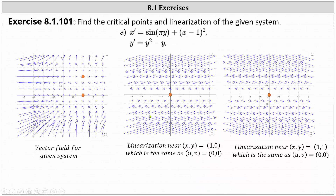Before we go, let's look at this graphically. On the left, we have the graph of the original vector field, which verifies we have critical points at one comma zero and one comma one. The graph in the middle shows the linearization near x comma y equals one comma zero, which is the same as u comma v equals zero comma zero. The last graph shows the linearization near x comma y equals one comma one, also at u comma v equals zero comma zero. When looking at the linearizations, the critical points always appear at the origin. The slope fields for the linearizations are pretty good approximations near the critical points of the original vector field. I hope you found this helpful.